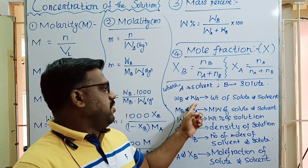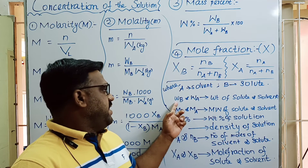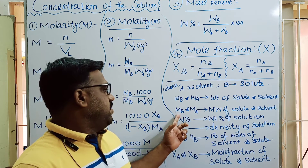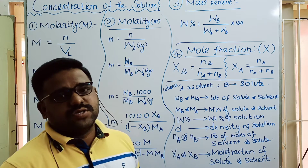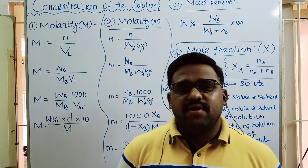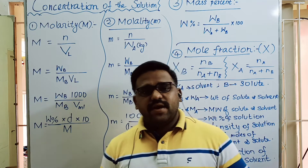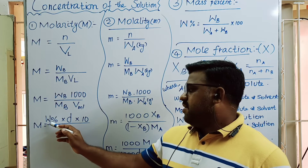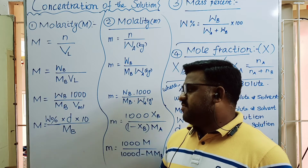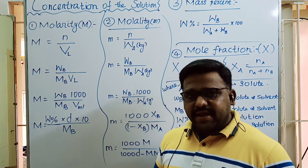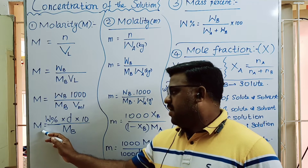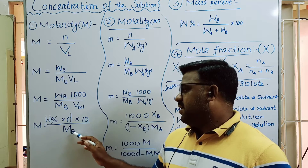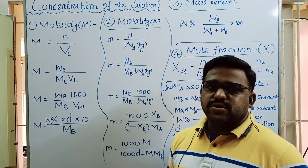In the notation, WB is the weight of solute and MB is the molecular weight of solute. Here, A refers to the solvent and B refers to the solute. For the last formula, using weight percentage and density: molarity equals weight percentage times density times 10 divided by molecular weight of solute.